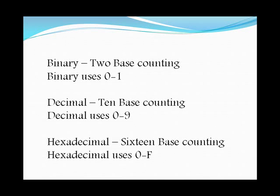In hexadecimal, you use zero through nine, and once you get to ten it reverts to the alphabet. So you use A for 10, B for 11, C for 12, D for 13, E for 14, and F is the final at 15. That gives you 16 representations total, zero through F.